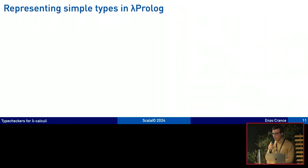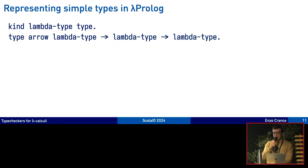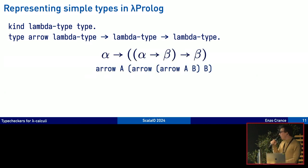Now we have the ingredients to write a type checker. Let's represent simple types in lambda prolog. We define another type called lambda type and we'll give a case arrow for the arrow type taking two lambda types. Here is how such a type would be encoded. A and B here, capital A capital B, are variables in lambda prolog, the meta-language's variables. We don't need a case for variables because we use the ones of the meta-language.